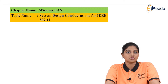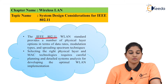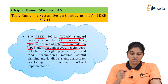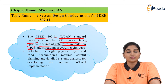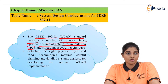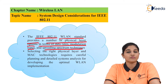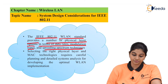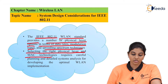The IEEE 802.11 wireless LAN standard provides a number of physical layer options in terms of data rate, modulation types, and spreading spectrum techniques. It uses frequency hopping spread spectrum (FHSS) or direct sequence spread spectrum (DSSS) modulation techniques, and sometimes orthogonal frequency division multiplexing (OFDM), to provide data transfer rates in the range of 10 Mbps, 11 Mbps, or more.